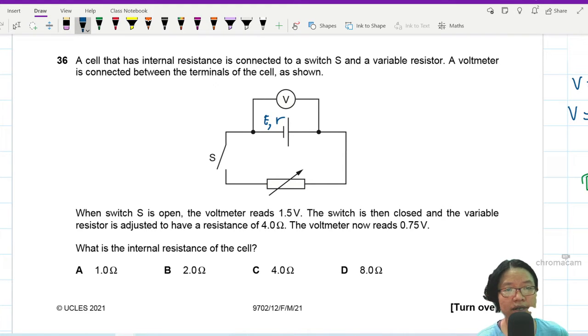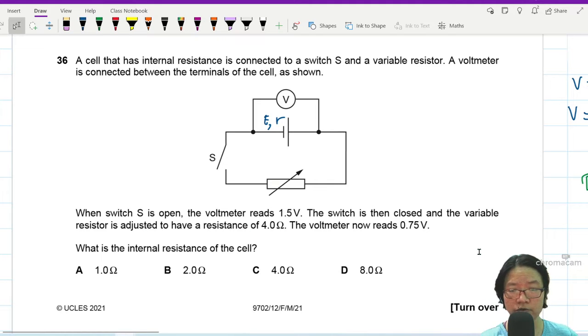A voltmeter is connected between the terminals of the cell. Okay, so the voltmeter is here. When the switch S is open, the voltmeter reads 1.5 volts. This 1.5 volt is EMF because it is directly connected across the terminals of the battery. So this is EMF.